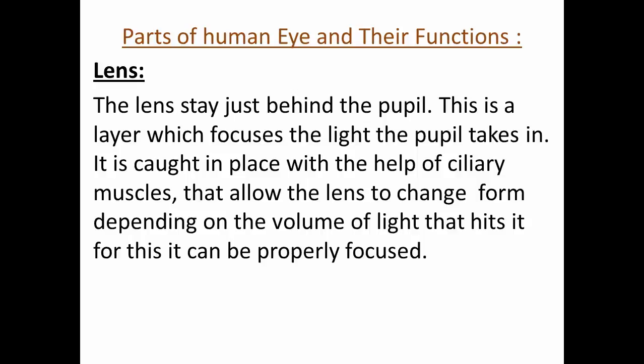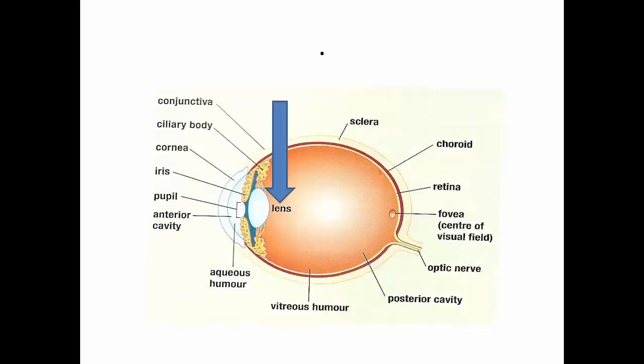Lens. The lens stays just behind the pupil. This is a layer which focuses the light the pupil takes in. It is held in place with the help of ciliary muscles, that allow the lens to change form depending on the amount of light that hits it, so that it can be properly focused.